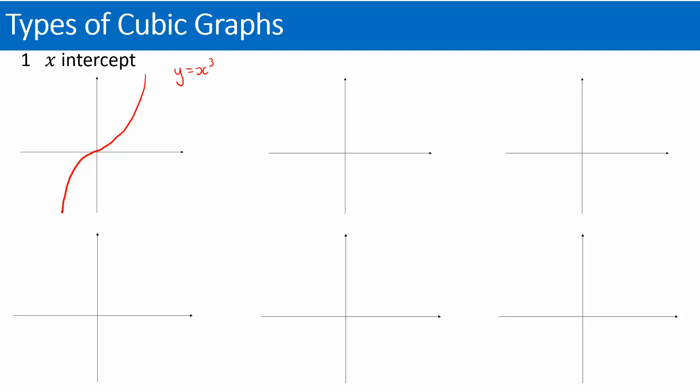Occasionally you will get a graph where it's tricky — you do get one x-axis intercept, but it doesn't look like the simple cubic. It may have a dip, but that dip doesn't actually touch the x-axis. There's only one point where it crosses. In this situation, for it to have one x-axis intercept, it would have to be something like x multiplied by a quadratic factor that you can't factorise — for example, x squared plus x plus 7. That graph is likely to give you one x-axis intercept, but because you can't factorise that part, you get a curve or turning point that doesn't touch the x-axis.